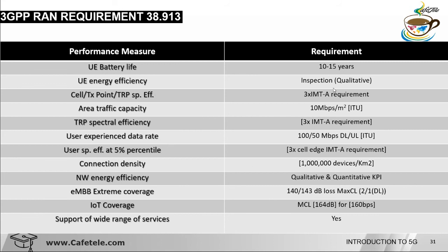Energy efficiency depends on utilization of the cell transmission reception point. Transmission reception point spectral efficiency is 3 times the IMT Advanced requirement. Area traffic capacity is 10 Mbps per square meter, depending on your bandwidth and transmission reception point density. User experienced data rate is 100 Mbps in downlink and 50 Mbps in uplink — meaning wherever you test, you must achieve at minimum this throughput.